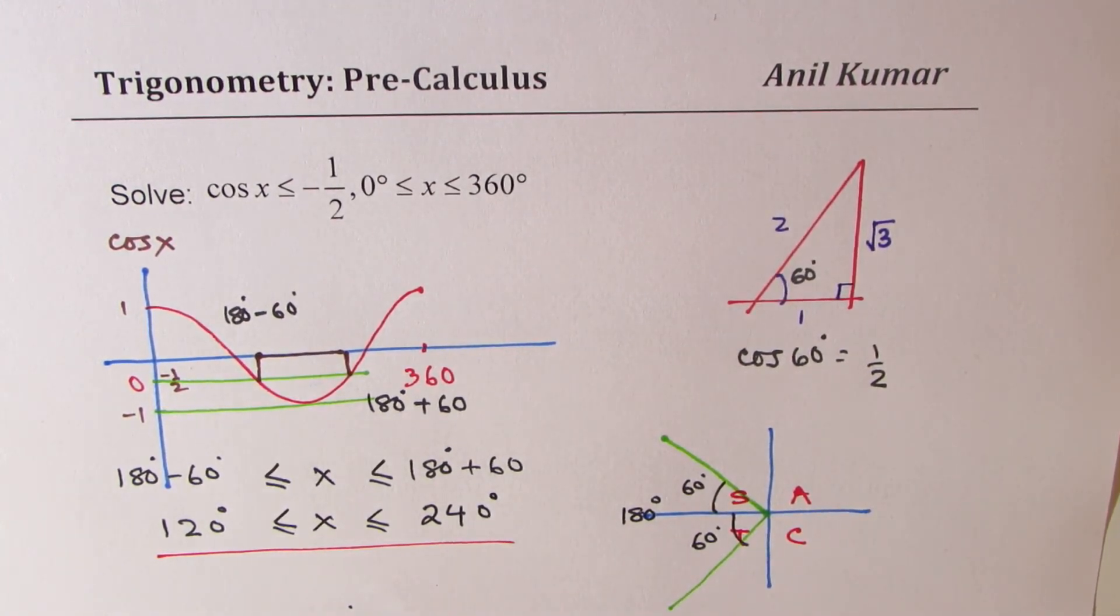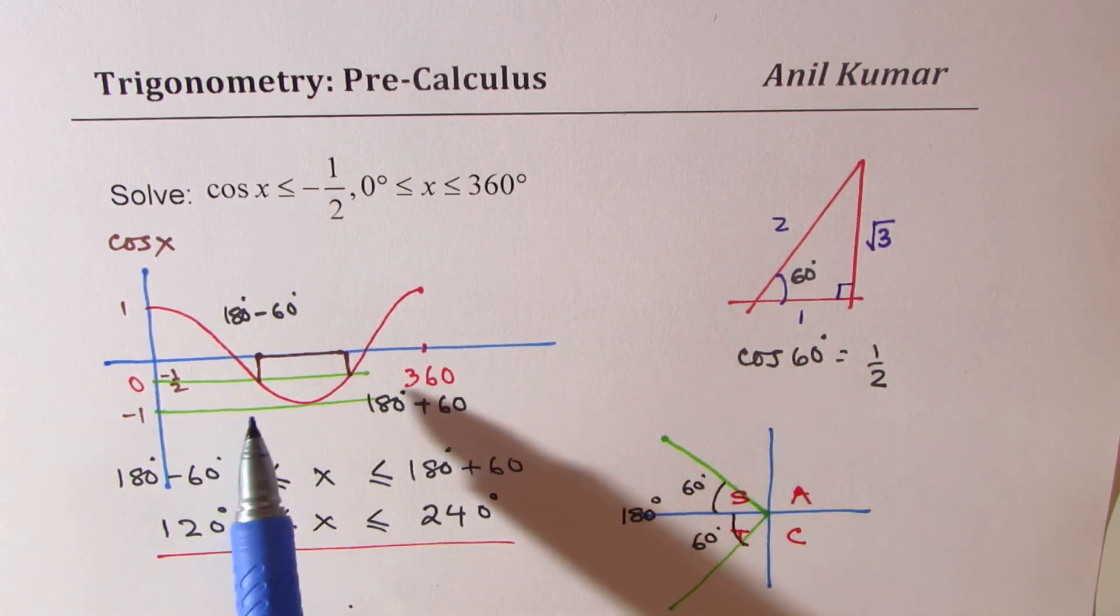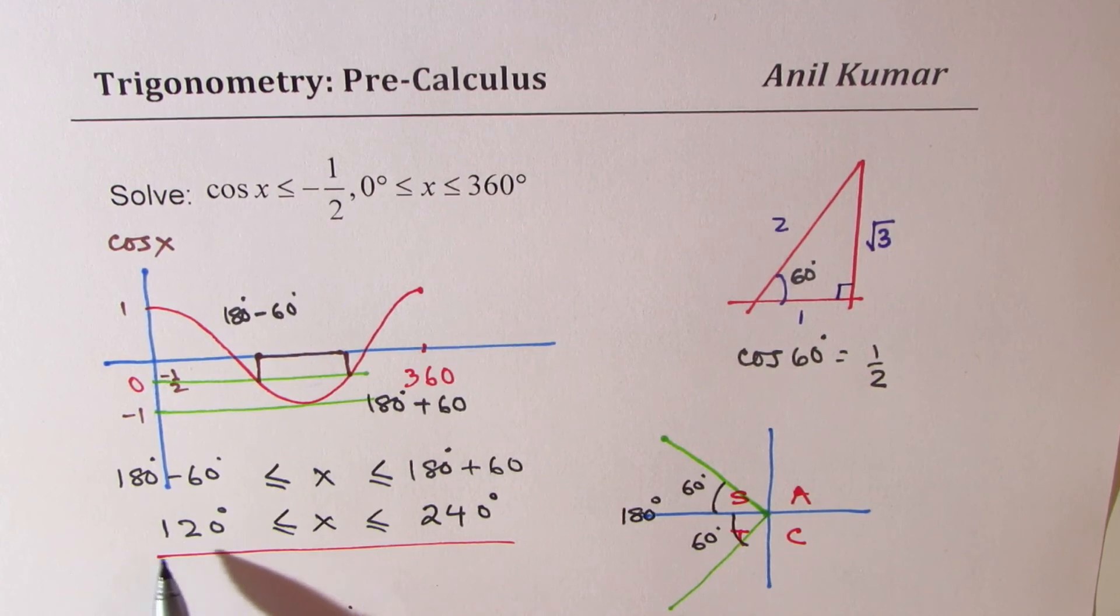So I hope it makes sense. Cos x is less than minus half, as you can see, in the interval when x is between 120 degrees and 240 degrees, as shown in this particular solution.